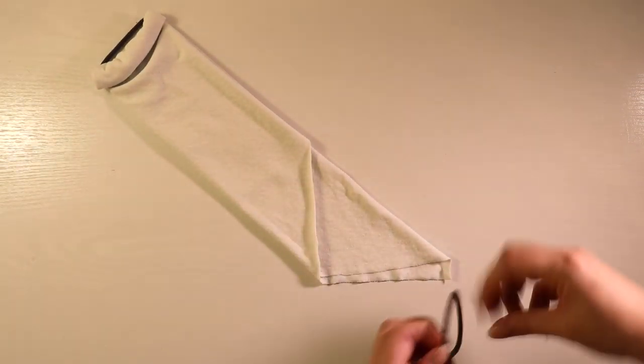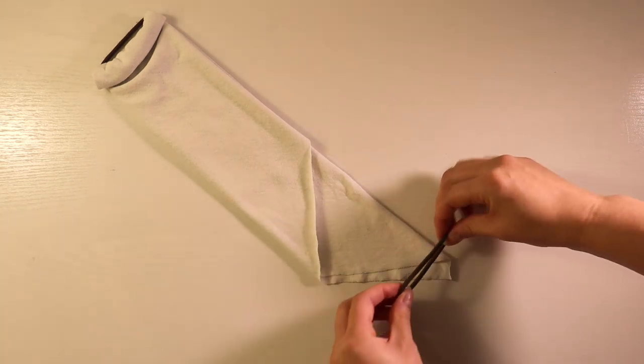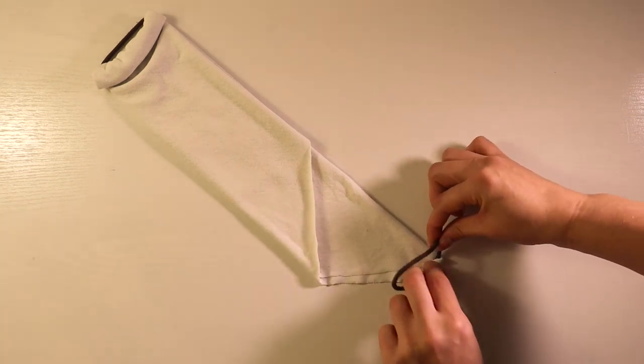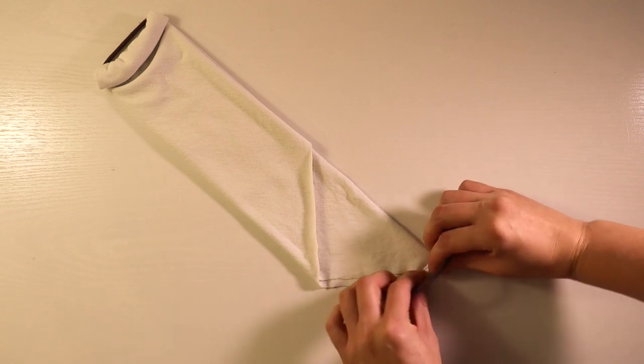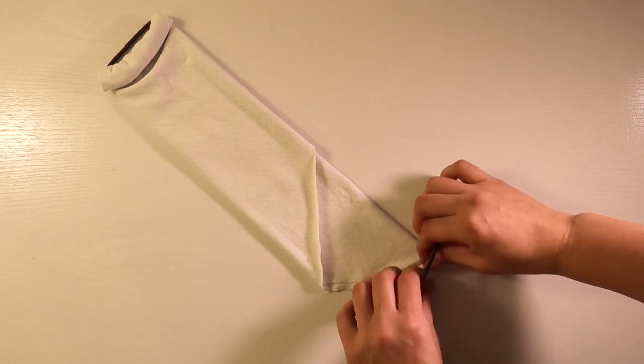Once you're finished with one side go ahead and turn it around and do the same thing on the other side. Again, first I place the band on top of the corner and then roll the fabric around the tie, stretching it along the way to help make it easier and neater.